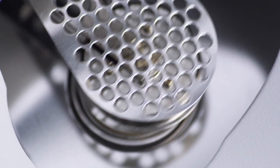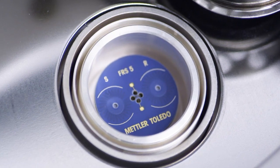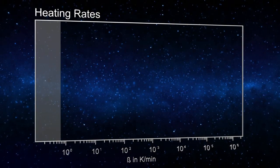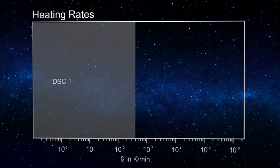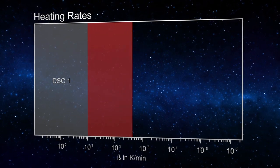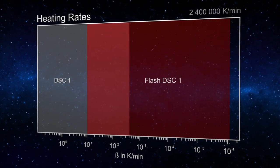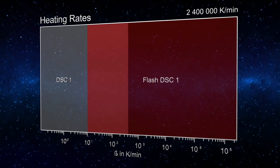The standard DSC-1 from Mettler Toledo has a maximum heating rate of 400 Kelvin per minute. In contrast, the new Flash DSC-1 provides heating rates of up to 2,400,000 Kelvin per minute